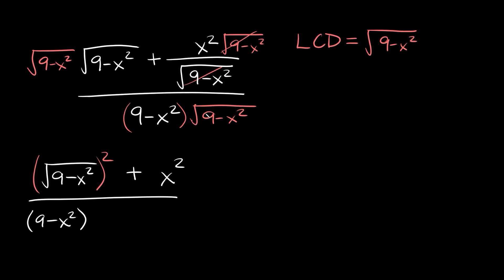A helpful trick here is you can rewrite radicals using exponents. Whenever you take the square root of something, it's the exact same thing as raising it to the one-half power. So we can rewrite the square root of 9 minus x squared as 9 minus x squared raised to the one-half power. The reason we're doing that is because now we have the exact same base in both parts of the denominator — 9 minus x squared — which lets us work with it more cleanly using exponent rules.